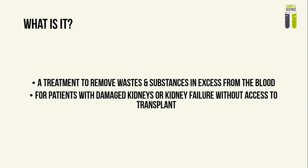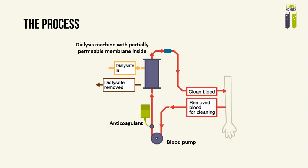Dialysis removes wastes, toxins, and substances that are in excess from the blood. Here is a very simple diagram of the dialysis machine. Dirty blood is first removed from the patient for cleaning. This blood then goes into the dialysis machine. The dialysis membrane is partially permeable, which allows movement of substances from the patient's blood into the dialysate, or the dialysis fluid.